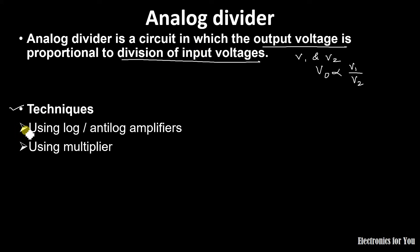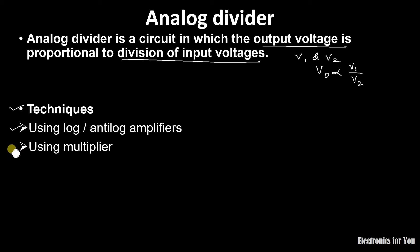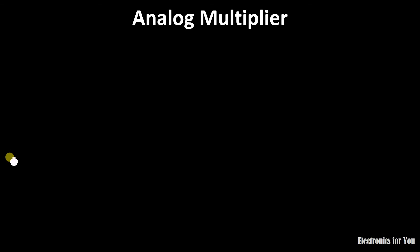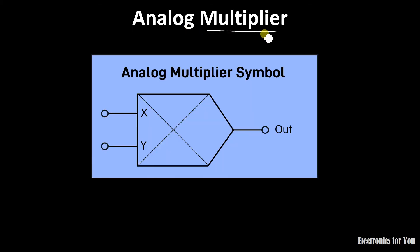The techniques used for analog divider are: using log/anti-log amplifier, and using multiplier. In our previous video we have already seen the analog divider using log/anti-log amplifier — you can watch that by clicking the I button. Here we will continue with the analog divider using multiplier.